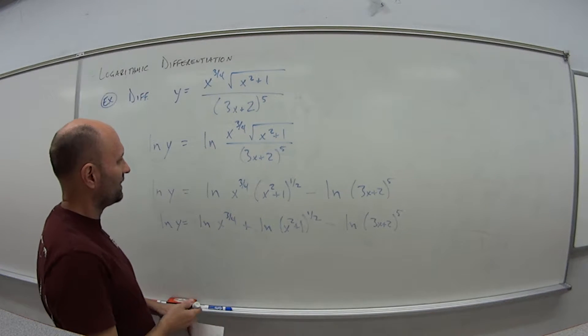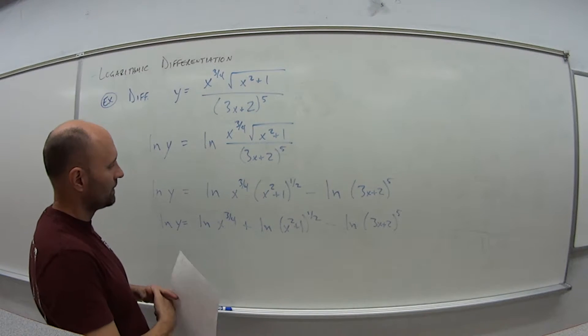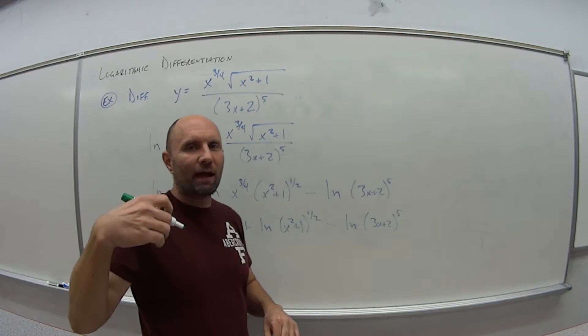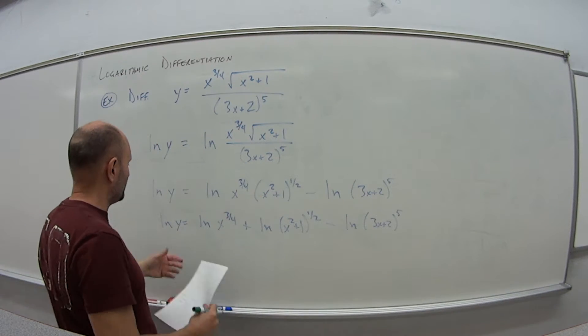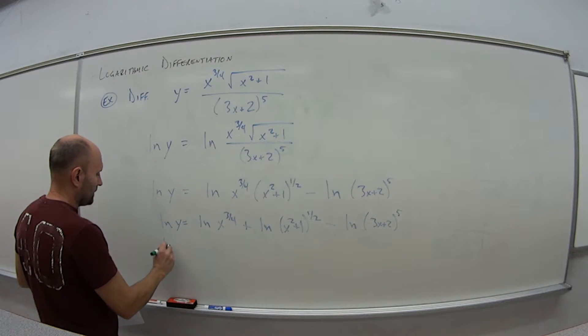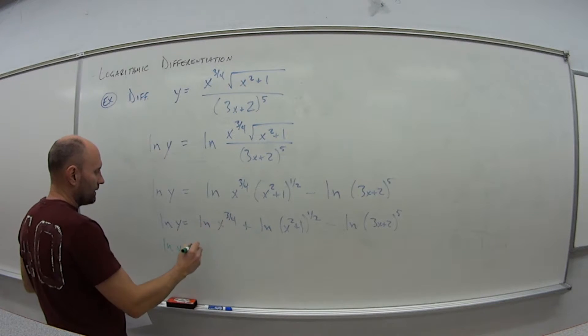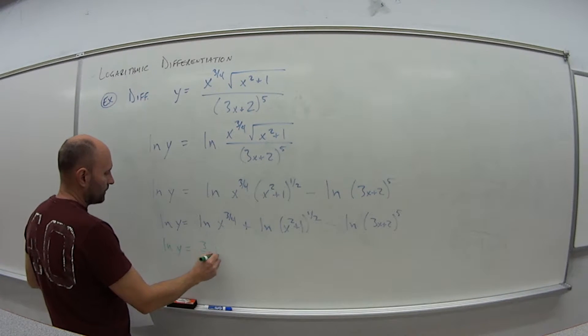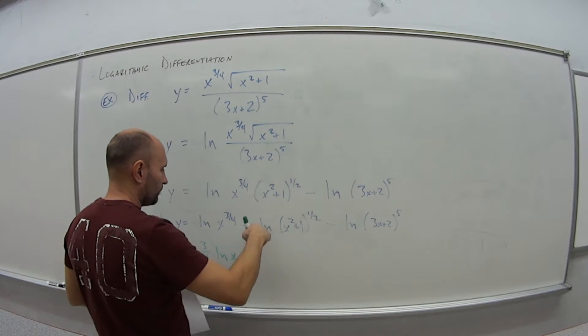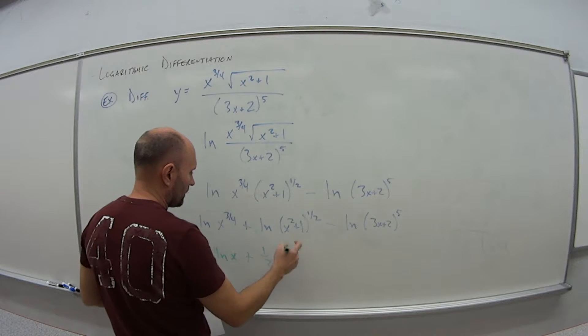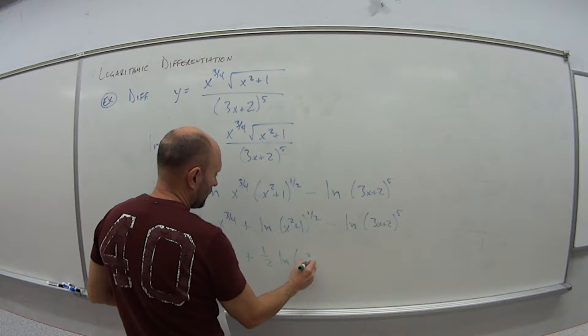Sorry to keep switching colors on here. Markers are dying on me. So now I'm going to apply the last law of logs, number three, which is when I have exponents, I can bring those to the front. So it gives me what? Natural log of y is 3/4 times natural log of x plus, bring down the 1/2, so 1/2 natural log of x squared plus 1,